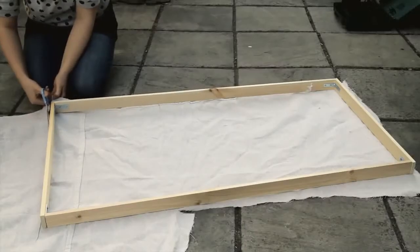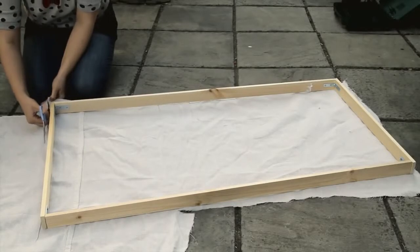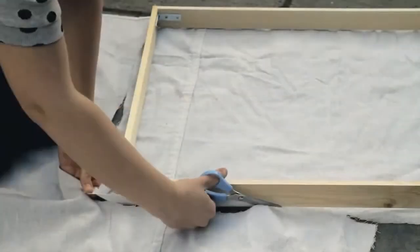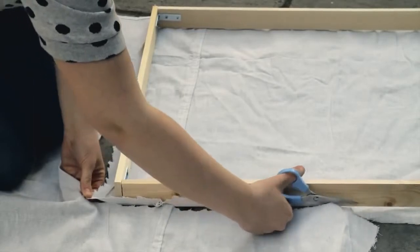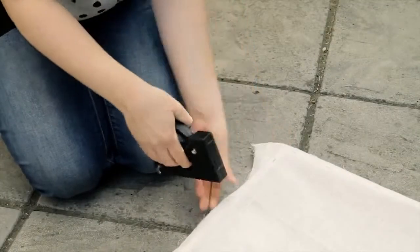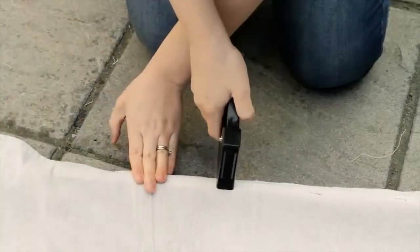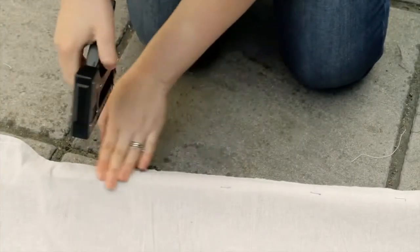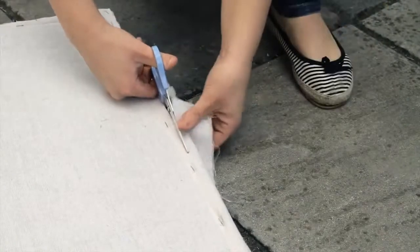Place your completed frame on a cotton dust sheet or other suitable material and cut around the edges. Staple the fabric to the sides of the wooden frame making sure it's nice and tight. Trim off the excess fabric.